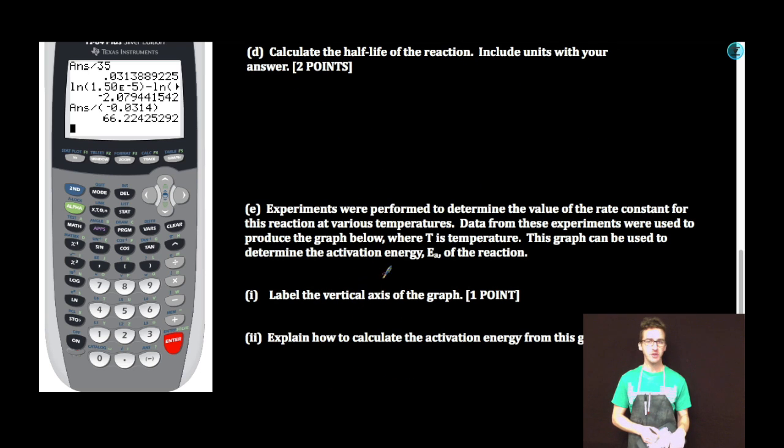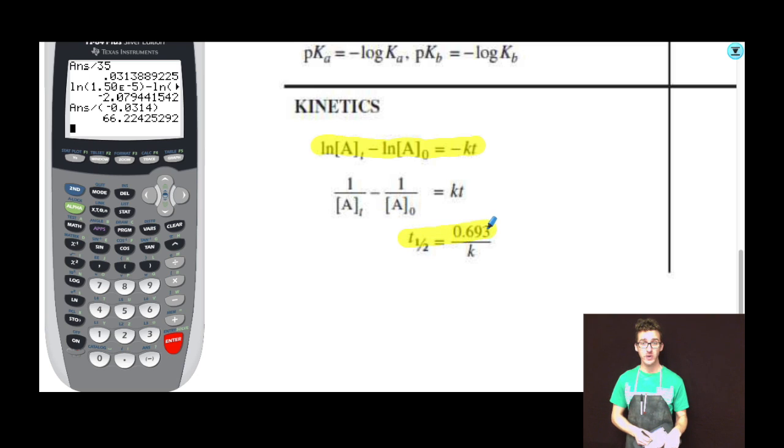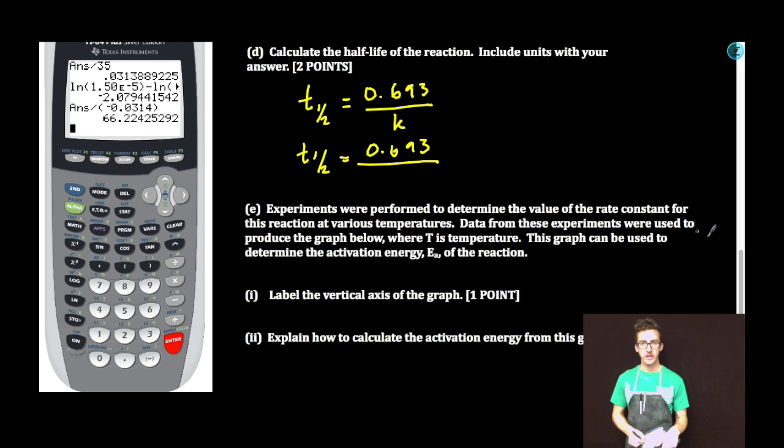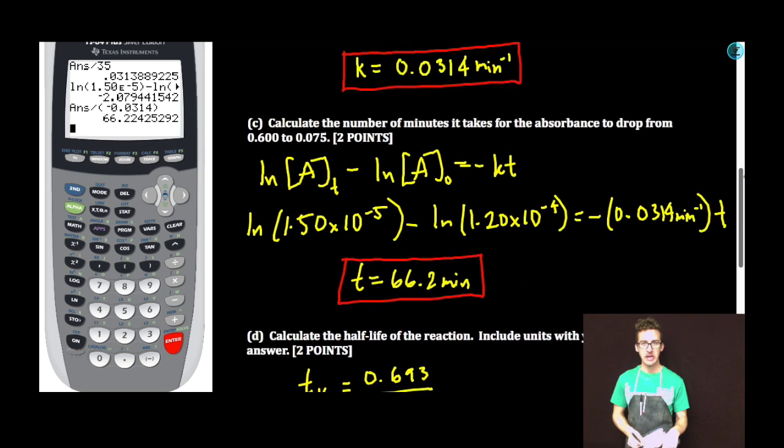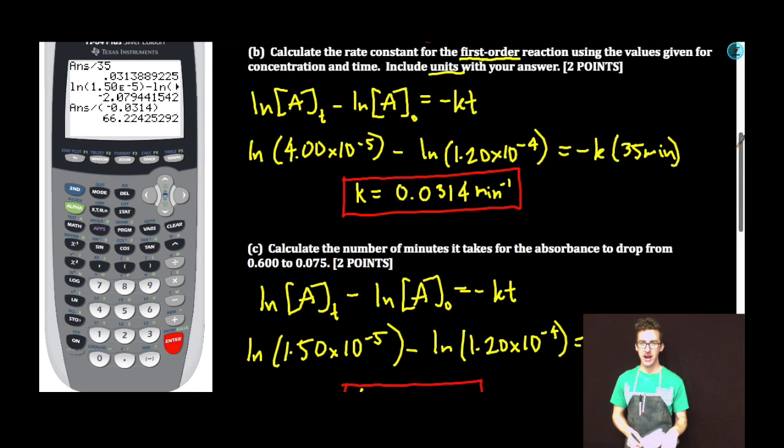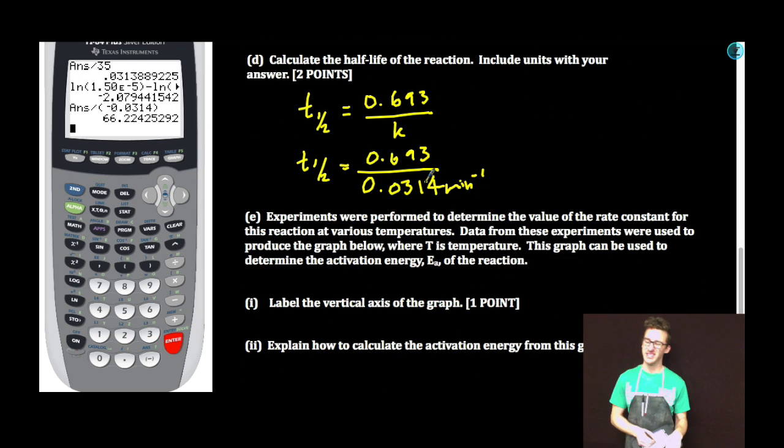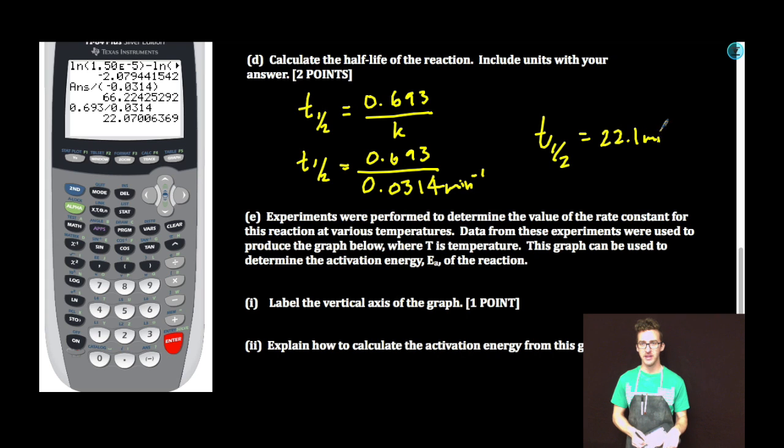Part D: Calculate the half-life of the reaction. Include units with your answer. Half-life of a first order reaction is given to us on our formula chart. We determine the rate constant up here in part B. Now all we have to do is take a quick trip to our good friend calculator land. 0.693 divided by 0.0314. Our half-life is 22.1 minutes.